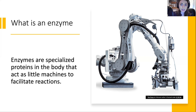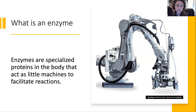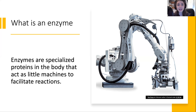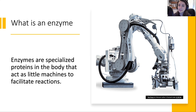So what is an enzyme? Enzymes are specialized proteins in the body. I like to think of them as little machines because they're always used to get something done in the body — they facilitate reactions. For instance, if you needed to get something transported using energy, an enzyme is going to do that. If you need to change a molecule to make it easier to excrete, an enzyme is going to do that. They are doers in the body.